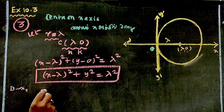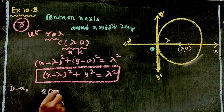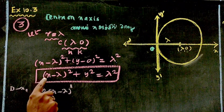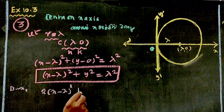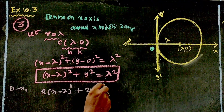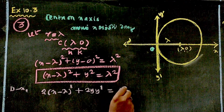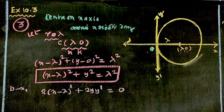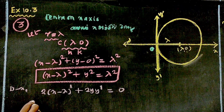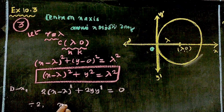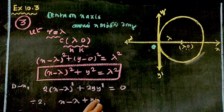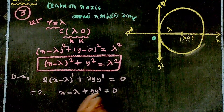Differentiating: 2(x - λ)·(1) from the first term, then differentiating y² gives 2y·y'. So we get: (x - λ) + y·y' = 0.